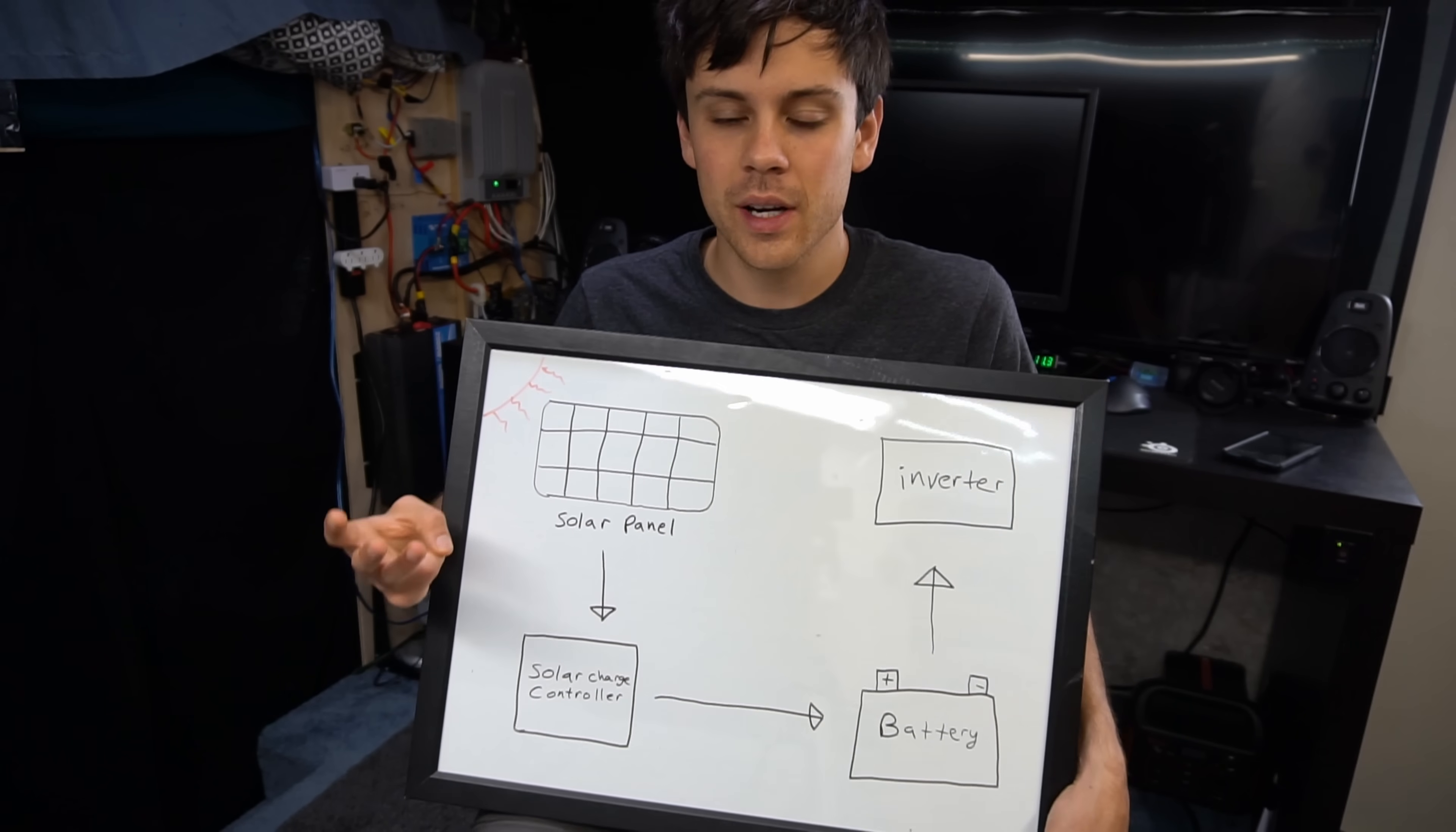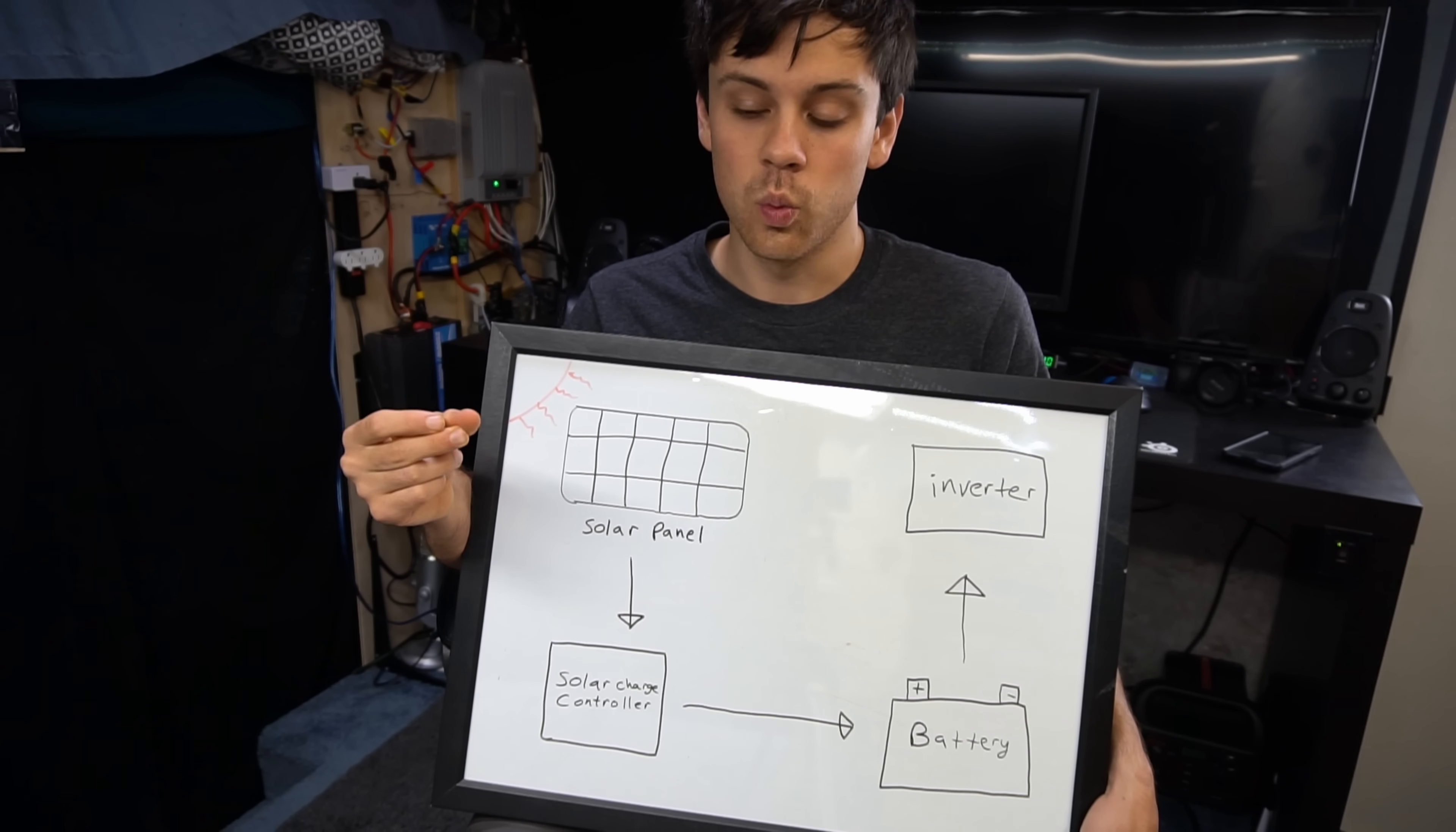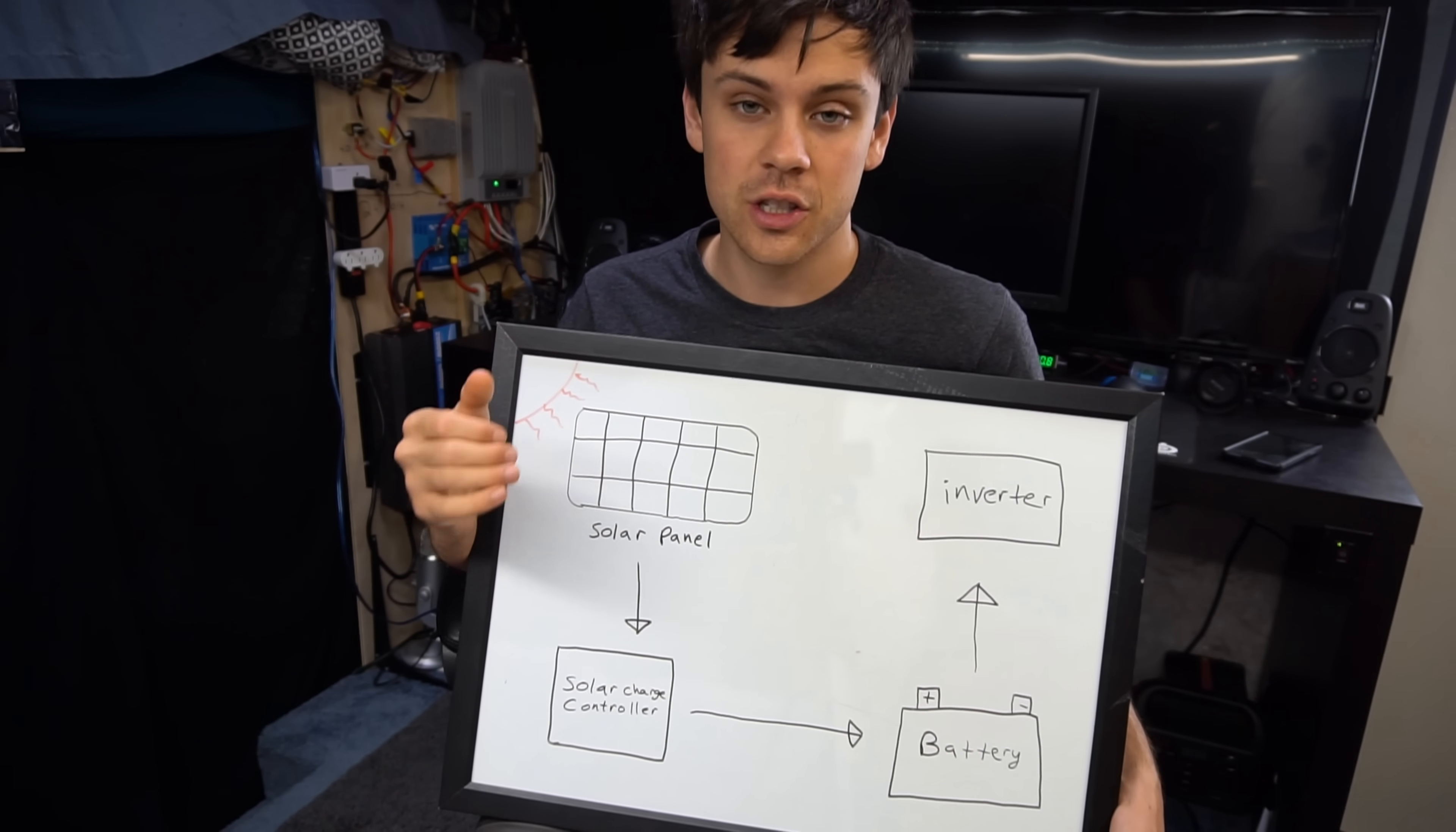In today's video we're going to be designing three different systems. We're going to be designing a badly designed system with huge losses, a good system with basic parts that everybody usually uses, and then we're going to be talking about how to maximize efficiency in a really good system and we are going to calculate the losses for each system.